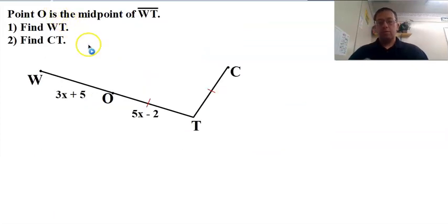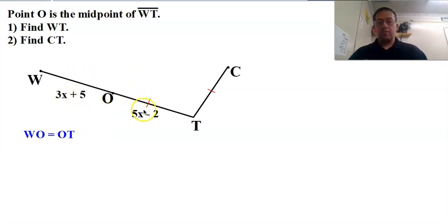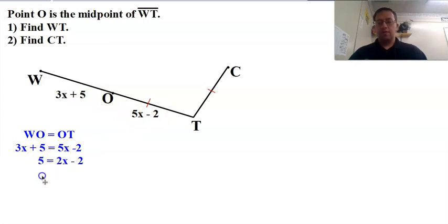Let's take a look here. Point O is the midpoint of segment WT. We want to find the length of WT and the length of segment CT. So for WT — it tells me that O is the midpoint, and if O is the midpoint, then WO is the same length as OT. Those two are the same length because it's the midpoint — it divides them into two congruent segments, so we can plug in: 3x + 5 equals 5x − 2. Let's move our x's together: subtract 3x from both sides, giving 5 = 2x − 2. Add 2 to both sides: 7 = 2x, so x = 3.5. But that's not my answer — I'm not looking for x, I'm looking for the length of WT.